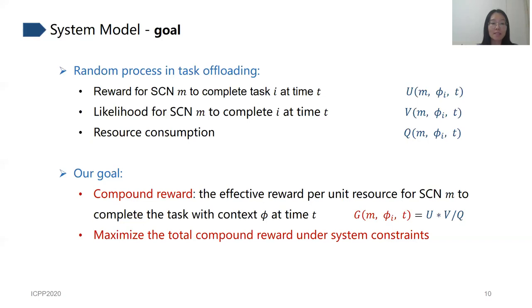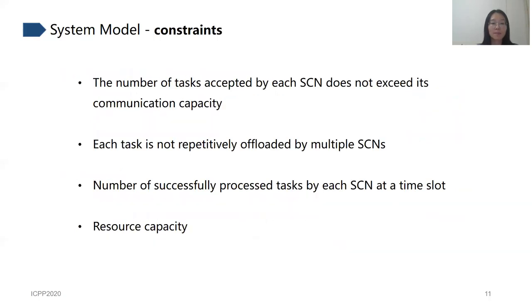Let's talk about the system constraints. First, the number of tasks accepted by SCN doesn't exceed the communication capacity. Second, to improve resource utilization, each task is not repeatedly uploaded by multiple SCN. In order to provide QoS guarantees, we also need to impose requirements about the number of successfully processed tasks by each SCN at a time slot. Last, each SCN's computing resources are limited, such as CPU and RAM. These constraints need to be considered while making task offloading decisions.